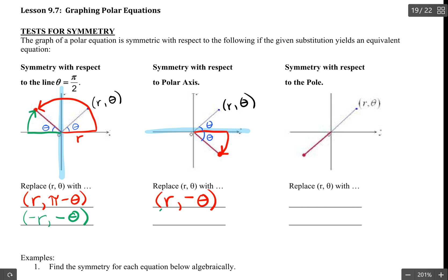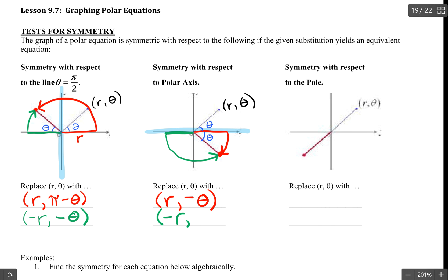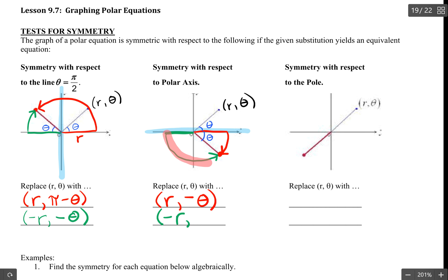Now for negative r in the polar axis case: if I go negative r, I go in that direction r units, then rotate around to the point. Going all the way to pi is too far, so I reverse the amount of theta. That gives negative r comma pi minus theta.